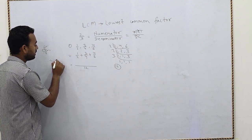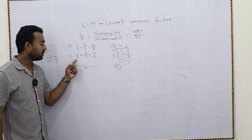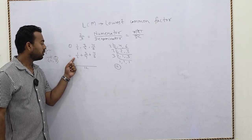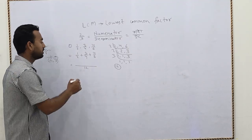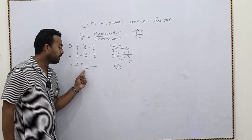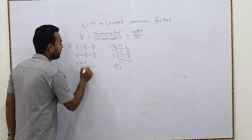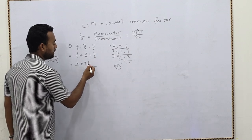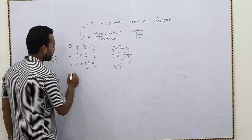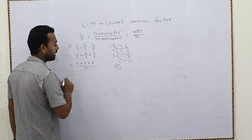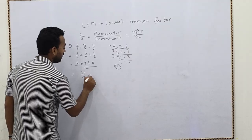After finding the LCM, there are two steps: divide and multiply. We divide each denominator into the LCM: 12 ÷ 2 = 6, and 6 × 1 = 6. Then 12 ÷ 4 = 3, and 3 × 3 = 9. Then 12 ÷ 6 = 2, and 2 × 4 = 8. Now we add: 6 + 9 = 15, and 15 + 8 = 23. So the answer is 23/12.